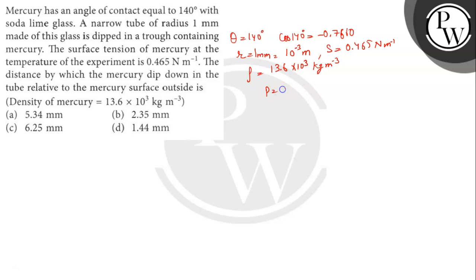Here we have the formula: h equals 2s cos theta divided by rho g. Now we put the values. h equals 2 into s which is 0.465...